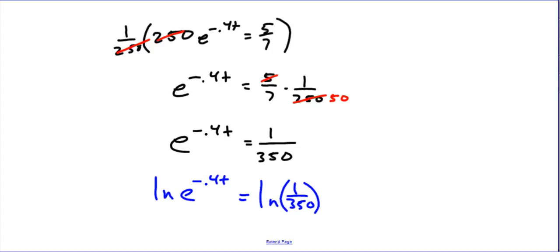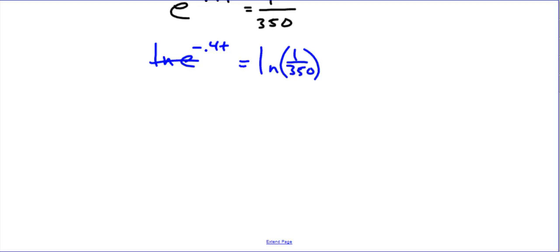Natural log e to the negative 0.4t power, natural log 1 over 350. What happens is, the inverse property, these cancel out. Function and its inverse equals the value you plug inside of it, and that value is negative 0.4t, and that equals natural log 1 over 350. From here, now we just need to solve for t, so I'm going to divide both sides by negative 0.4.